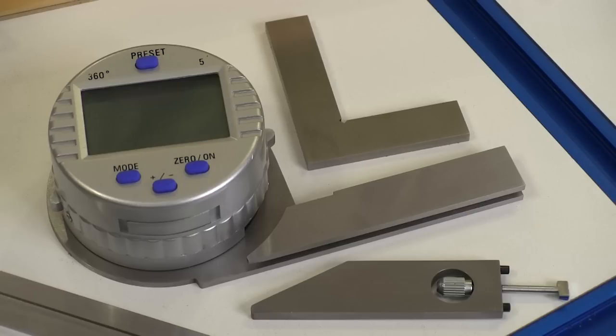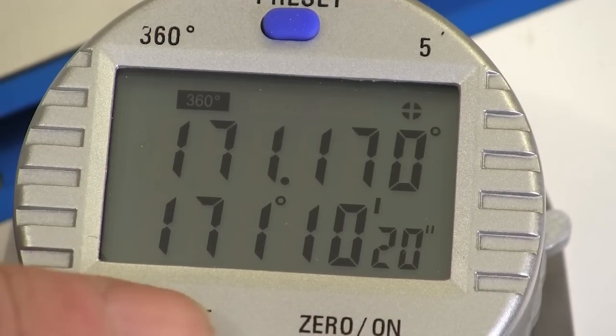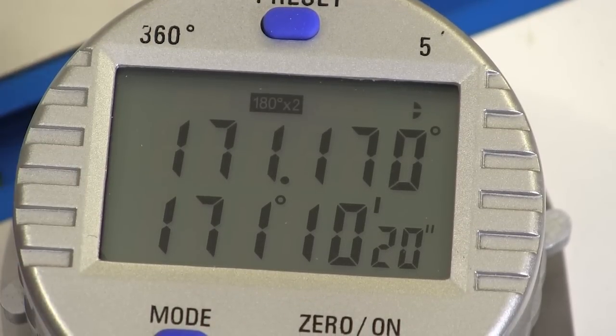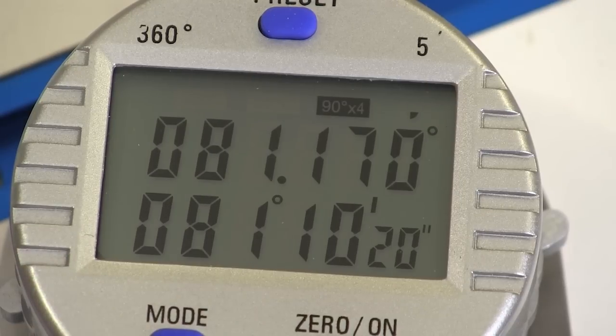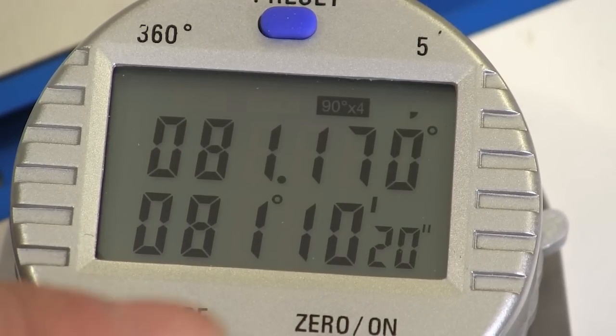The mode switch lets you divide the scale from a full 360 degrees to a pair of 180 degree segments or four 90 degree segments, whichever makes it easiest to do your job. You can go back to any of those modes whenever you want.